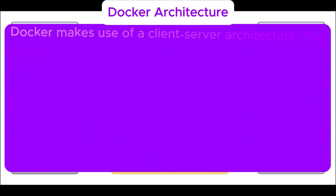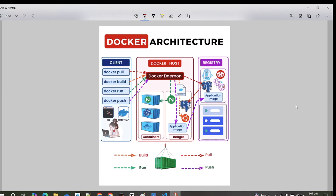Let's start with Docker architecture and the components of how it works. Docker makes use of client-server architecture. The Docker client talks with the Docker daemon, which helps in building, running, and distributing Docker containers. The Docker client can run with the daemon on the same system, or we can connect the Docker client with the Docker daemon remotely using REST API, Unix socket, or a network.